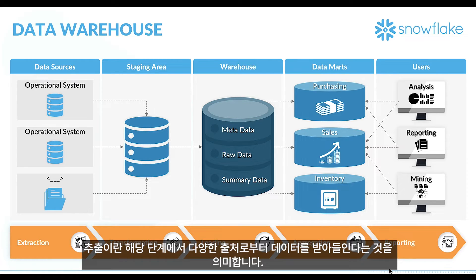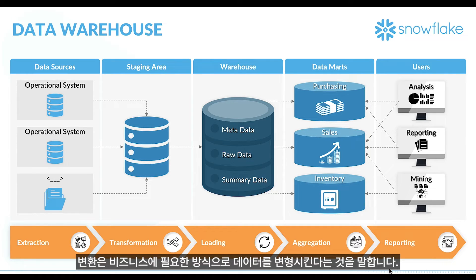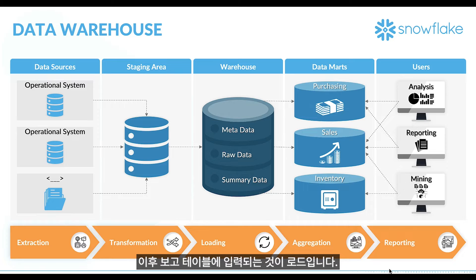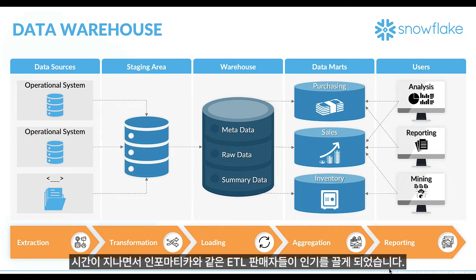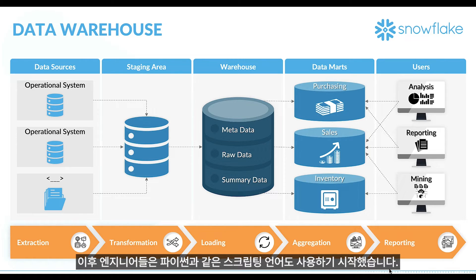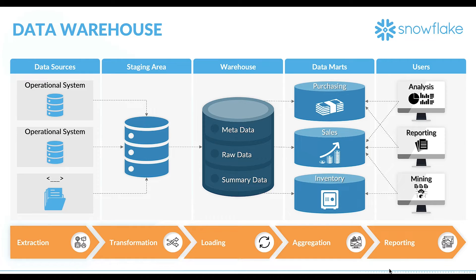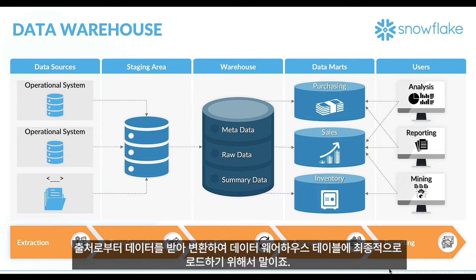Extract means ingesting data from all different sources into a staging area. Transform means processing the data as per business needs, then loading it into reporting tables. Traditionally this was achieved using stored procedures. Over time, ETL vendors such as Informatica became popular, and engineers also started using scripting languages such as Python to load, transform, and load data into the final data warehouse tables.